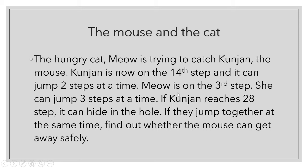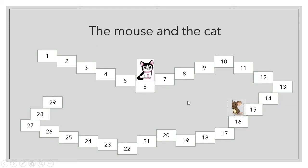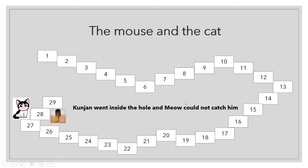Meow is on the third step and she saw Kunjan standing on the 14th step. She thought, 'Come, let's catch Kunjan and have a feast!' Now I am going to show you how both of them are jumping. See — Kunjan reached his hole! Kunjan went inside the hole and Meow could not catch him.